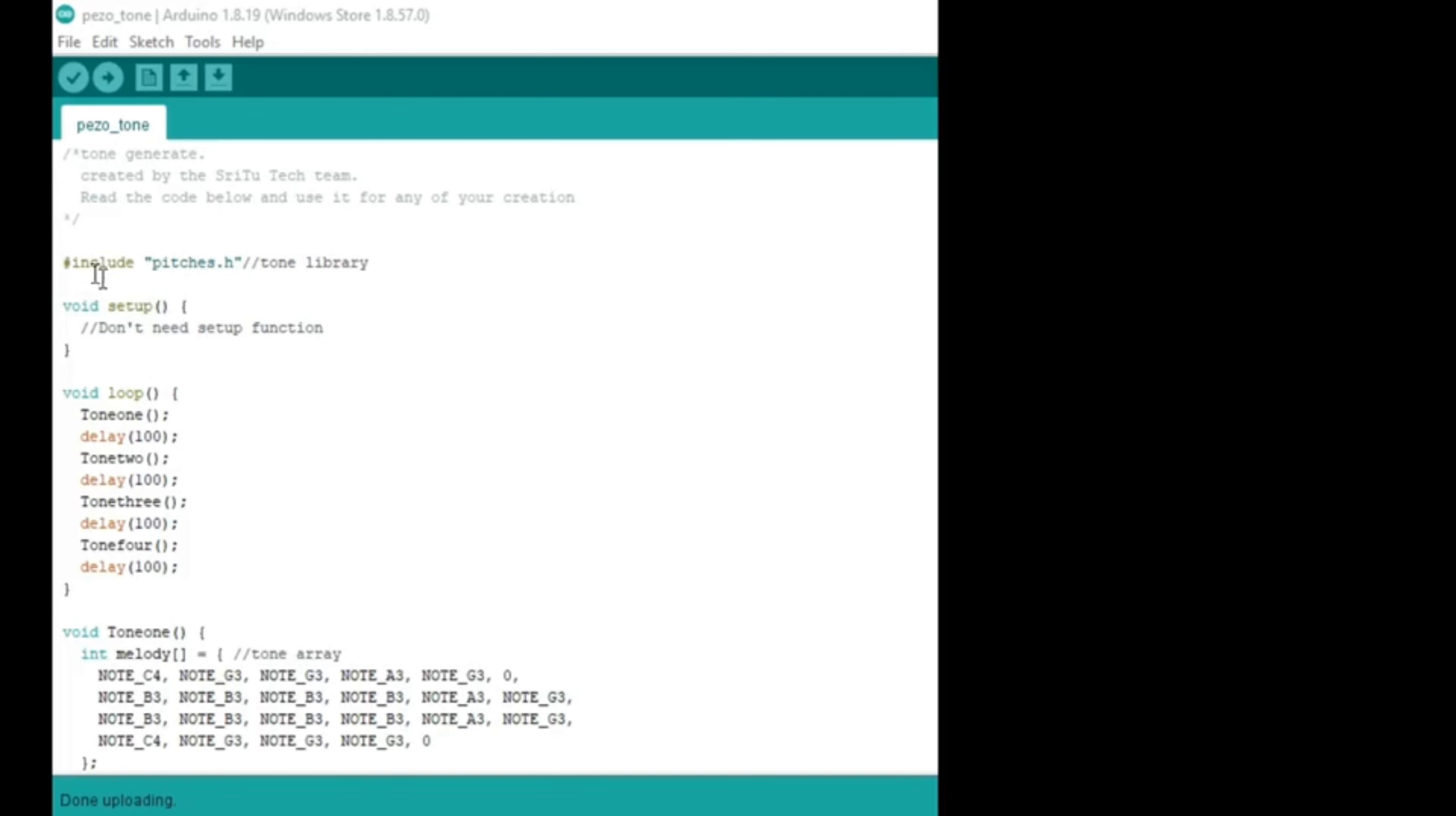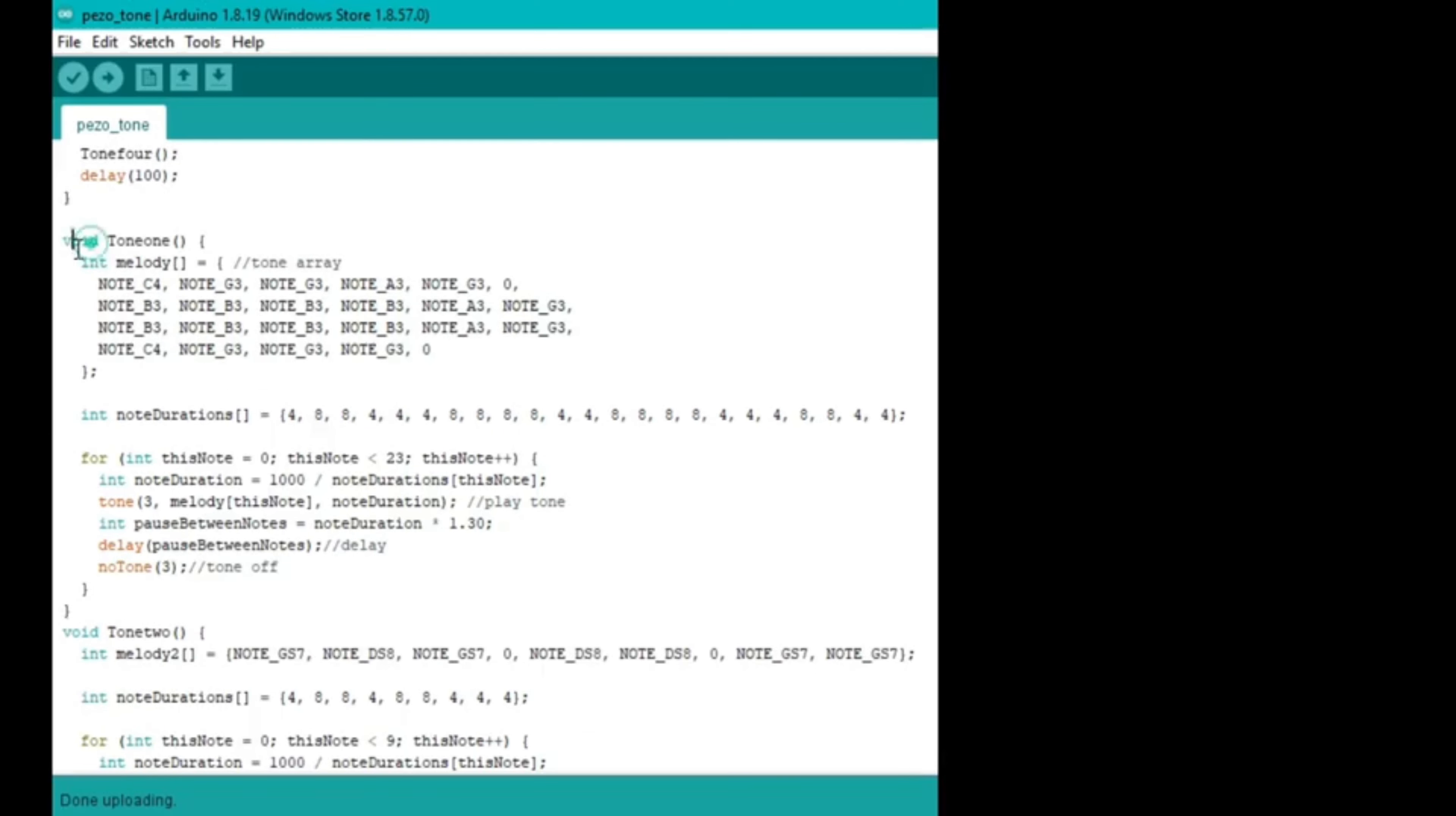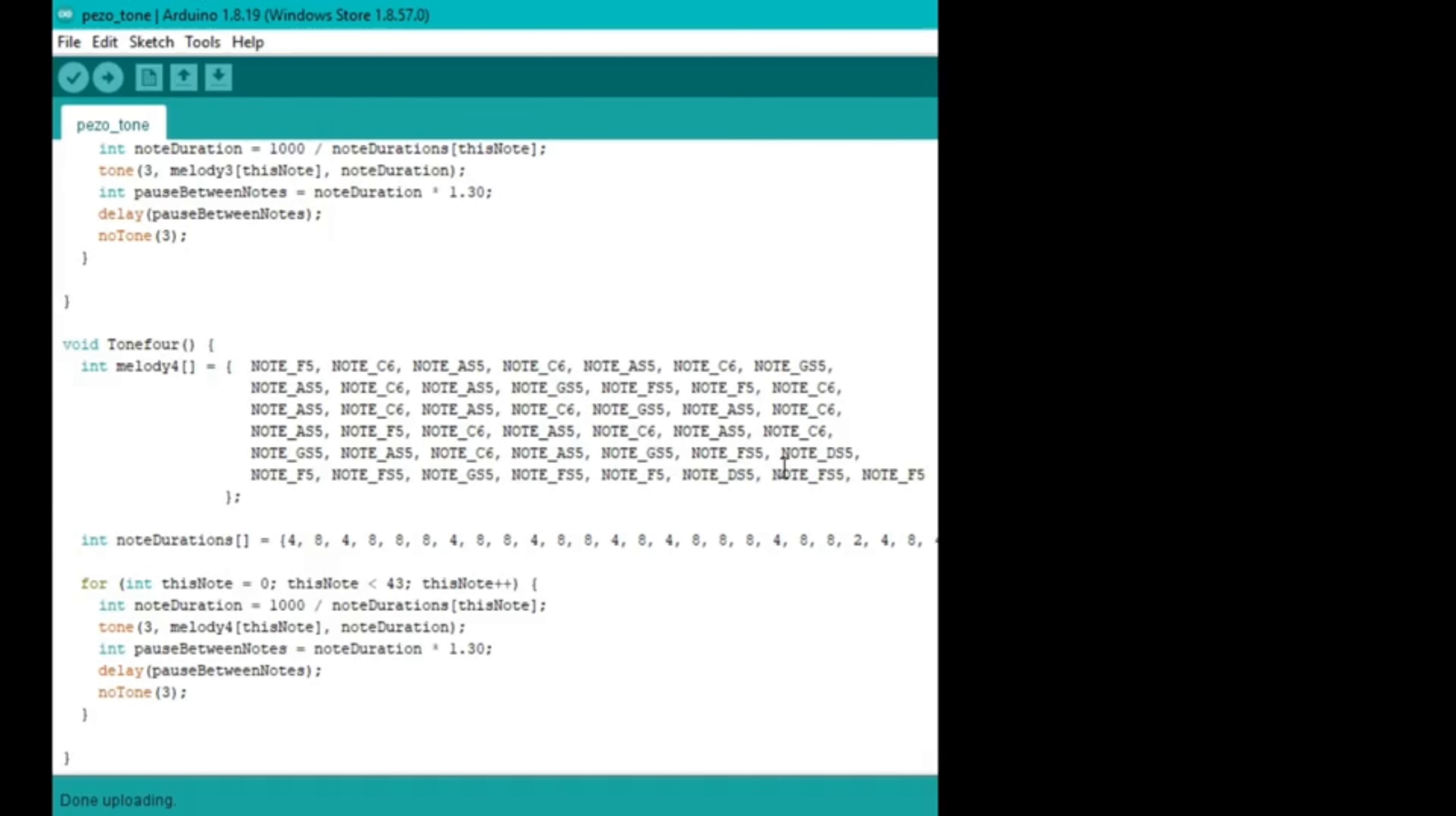We have added a pitches.h library which is basically the tone library of NodeMCU and you have to download it separately. This is not an inbuilt library. And there are some other parameters and functions there about the tones library. So you can read them and then upload this particular code to your Arduino Nano and then see the results.